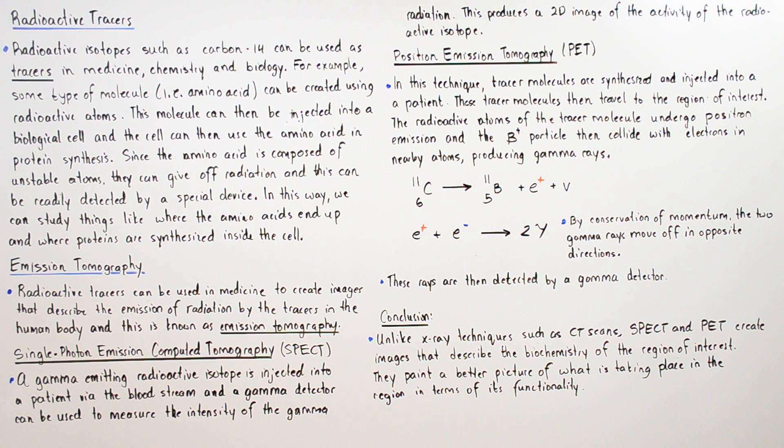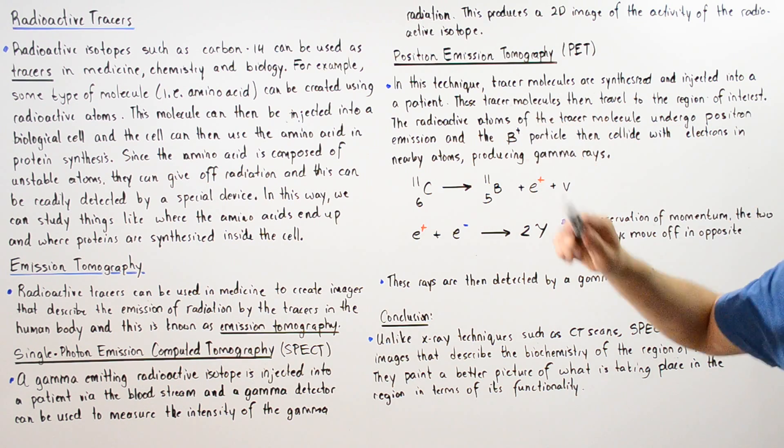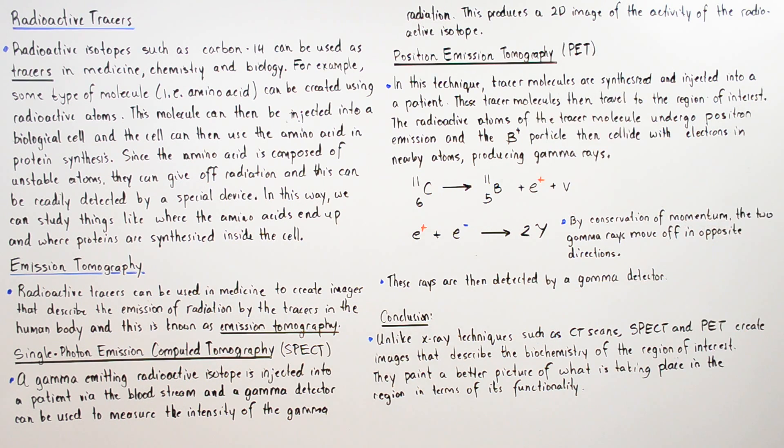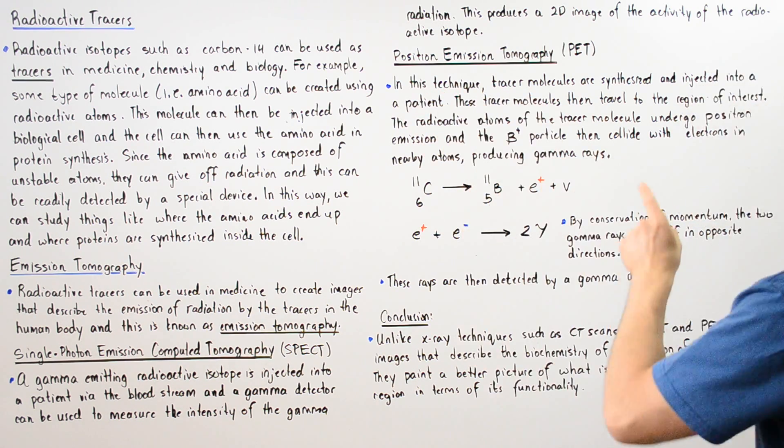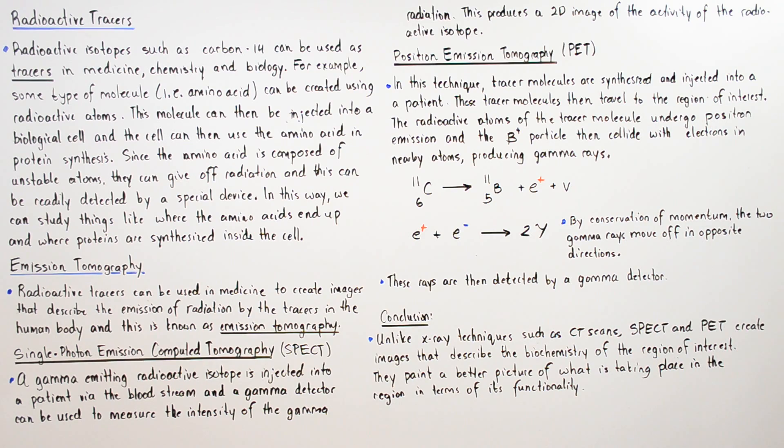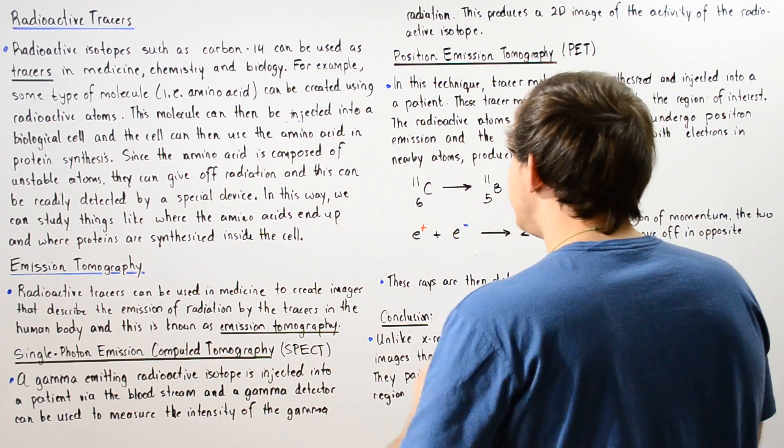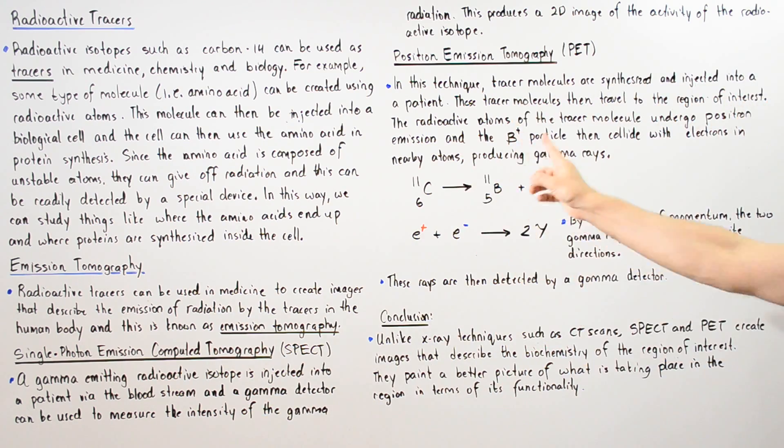In this technique, tracer molecules are synthesized and injected into our patient. These tracer molecules then travel to the region of interest. The radioactive atoms undergo not gamma emission, but first a positron emission releasing a positron particle.